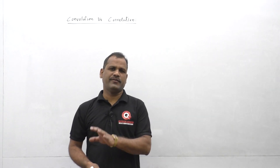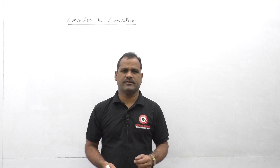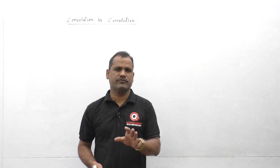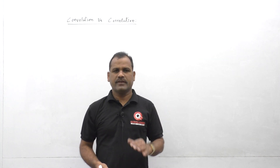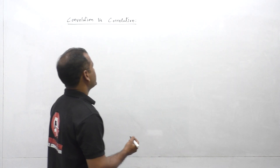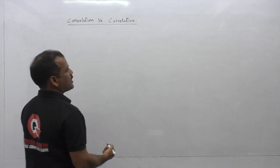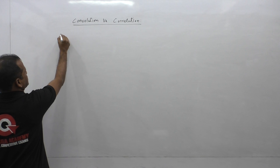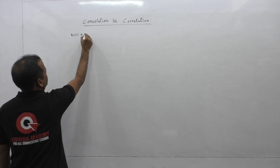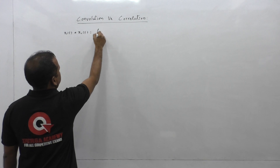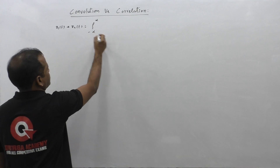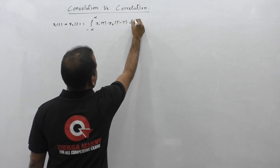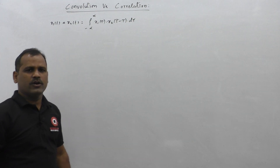Now let us see the relation between convolution and correlation functions. I will take a bit more time to explain this one because many students are confusing with this derivation. I will show you clearly in detail step by step. First, I want to recall how we take the convolution operation of given two signals x1(t) and x2(t). The relation is the integral of x1(tau) * x2(t - tau) d_tau — this is the convolution of two given signals.